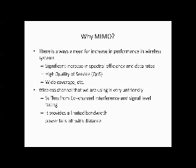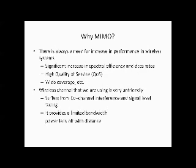Why MIMO? In wireless communication systems there is always a need for increased performance, and MIMO is one method of using multiple antennas on both receiver and transmitter sides to enhance communication performance. Since MIMO uses spatial diversity, both transmit and receive diversity increases, improving the reliability of the link between transmitter and receiver. This is important for channel conditions that are noisy, have fading, or are otherwise challenging. It can also increase the usable range by requiring less repetition of data due to loss or damage across the channel, increasing reliability and throughput of a system by 50% or more.